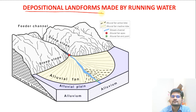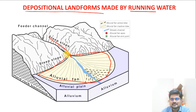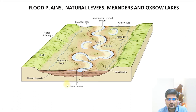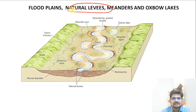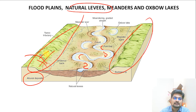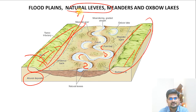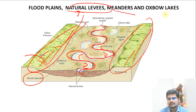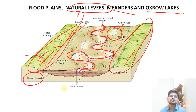Examples of depositional landforms by running water (fluvial): alluvial fans and cones form at the base of steep slopes. In floodplains, natural levees form as embankment-like alluvial deposits along river sides. Meanders form through serpentine river movement, and when a river changes course, an oxbow lake is left behind from the earlier meander. These are all features of fluvial deposition in plain areas.